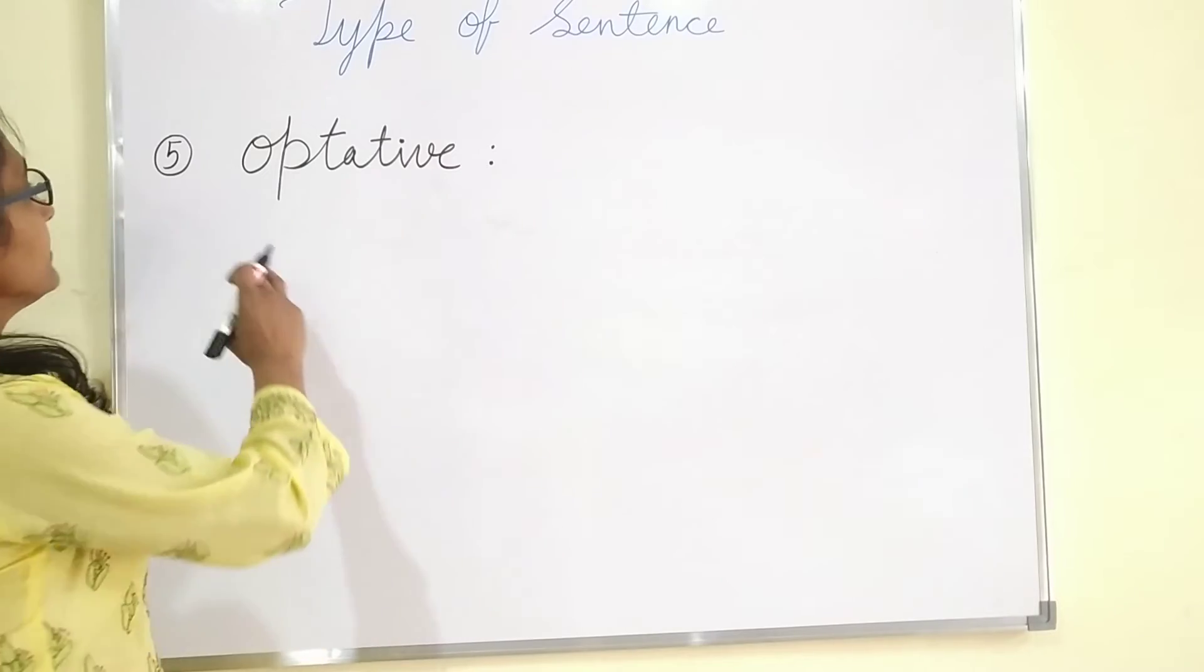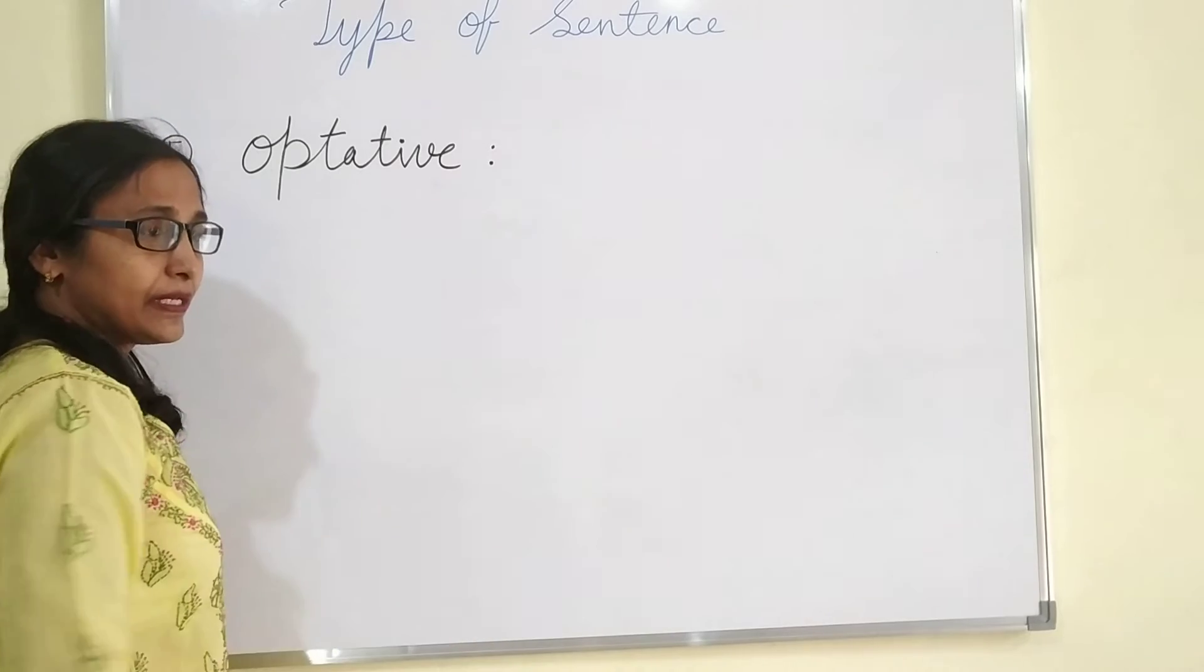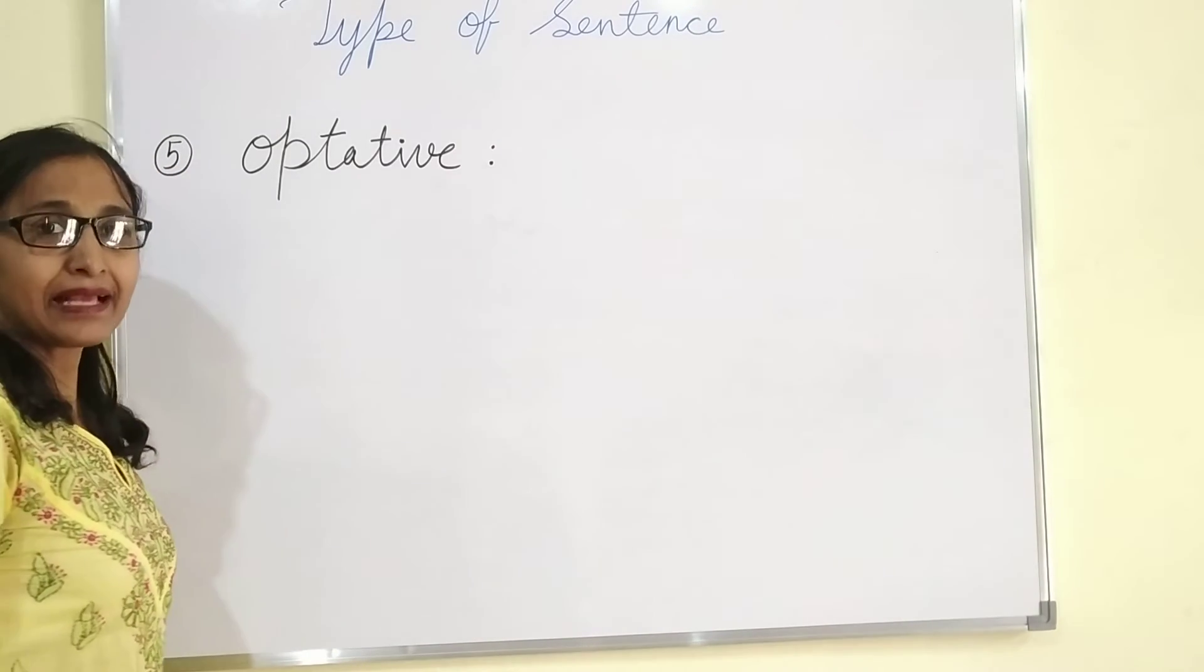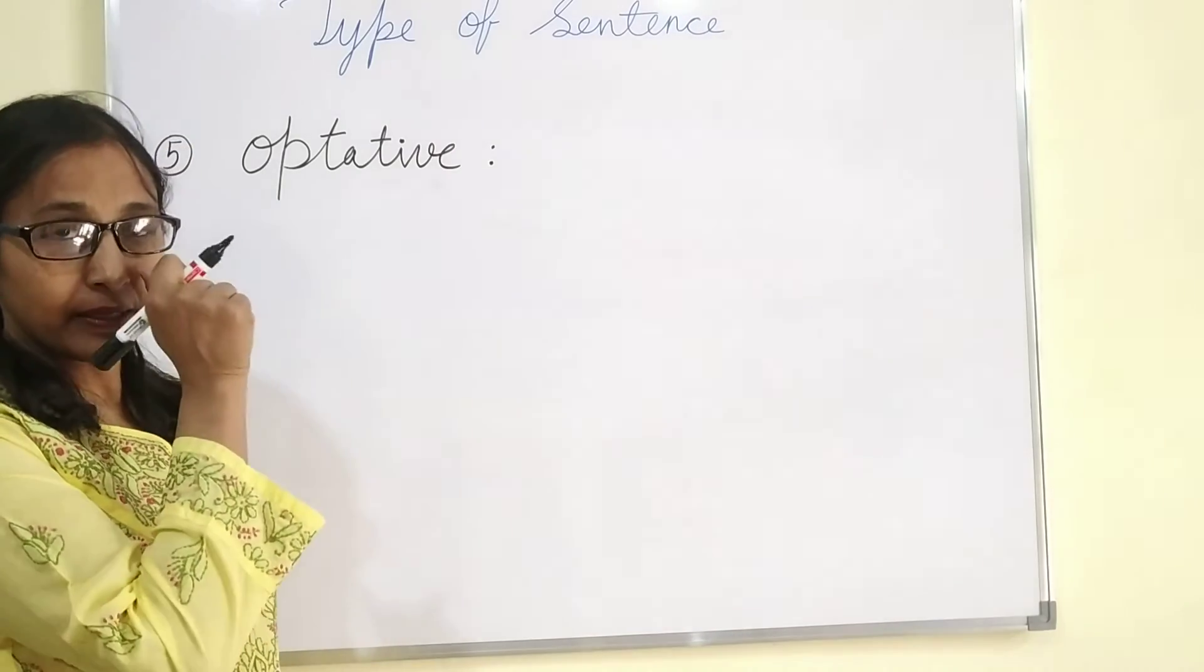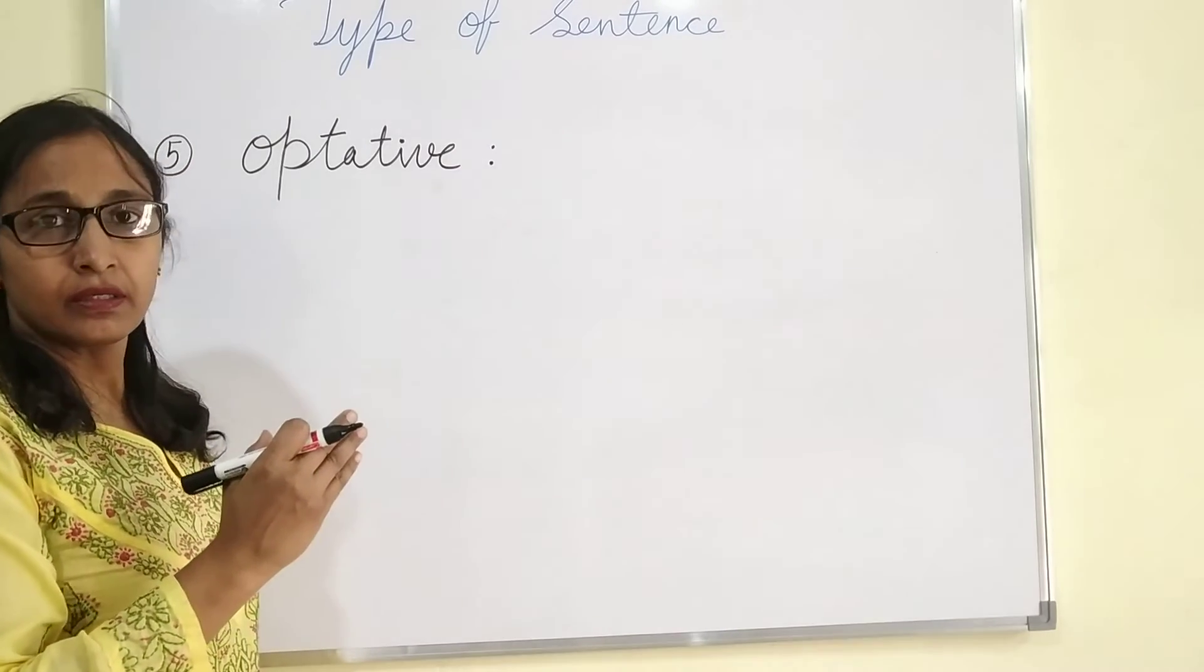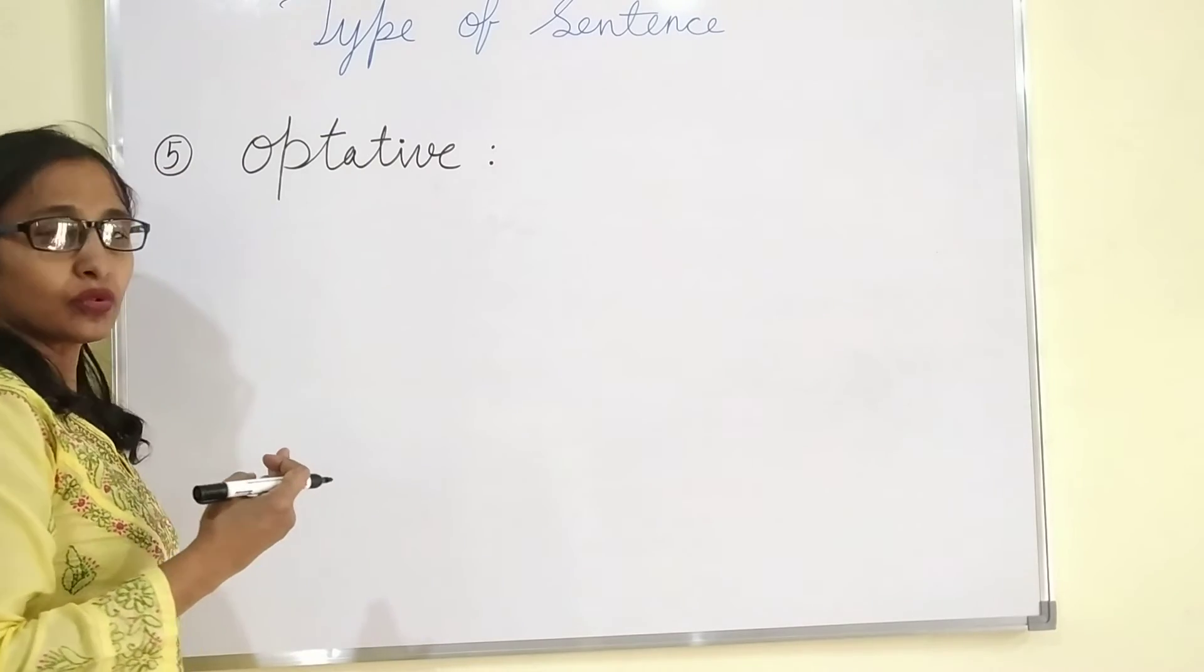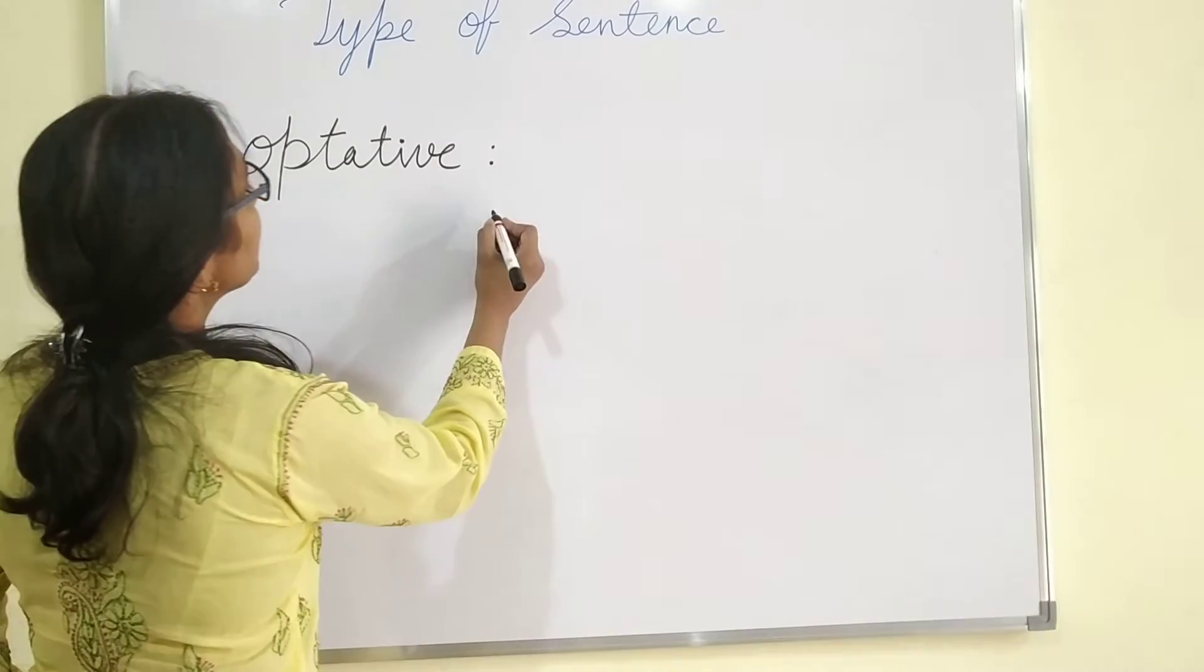Next is optative sentence. Optative sentence is which deal with wishes and blessings, even curses too. Means, kisiy ko aashirvad dena, kisiy ki liyee bura sochna, aur ichha karna, wishing. To ye, optative sentence kehlate hain. Examples are: